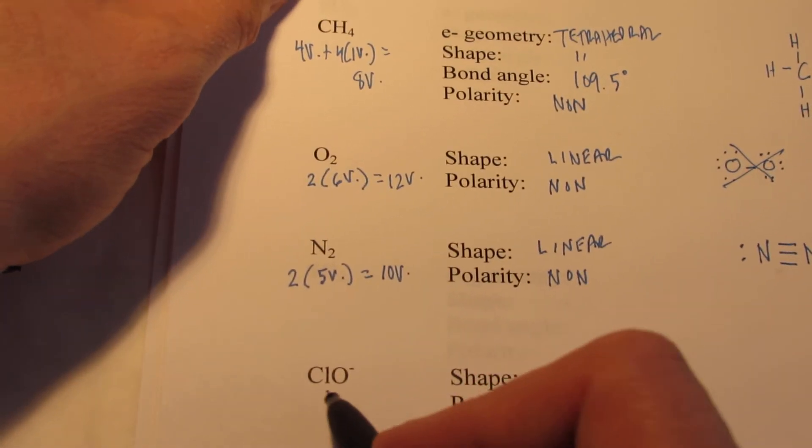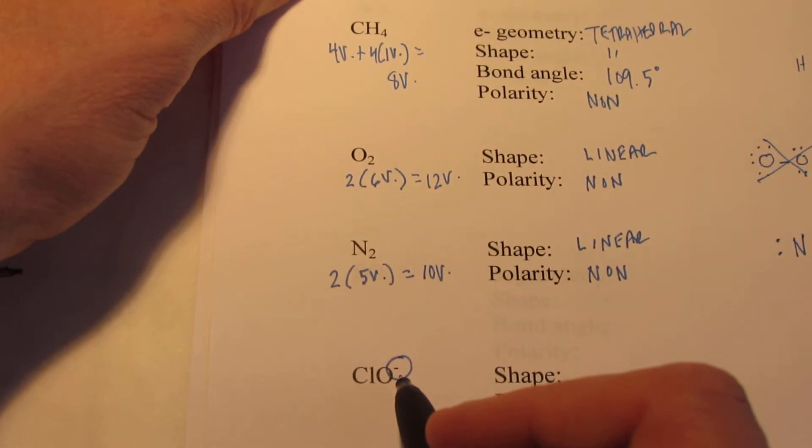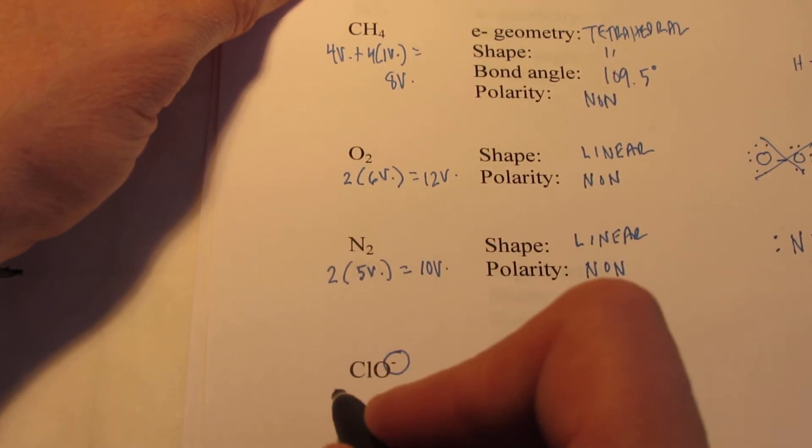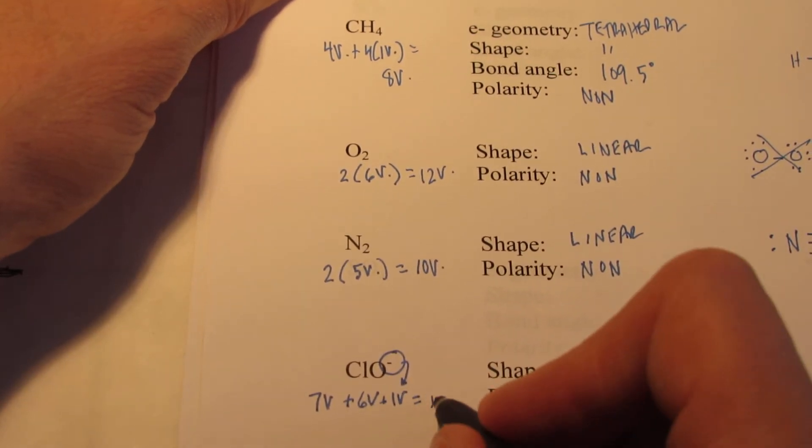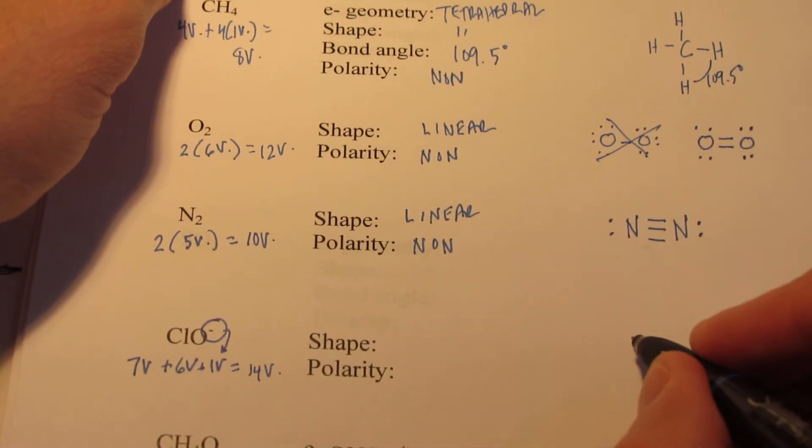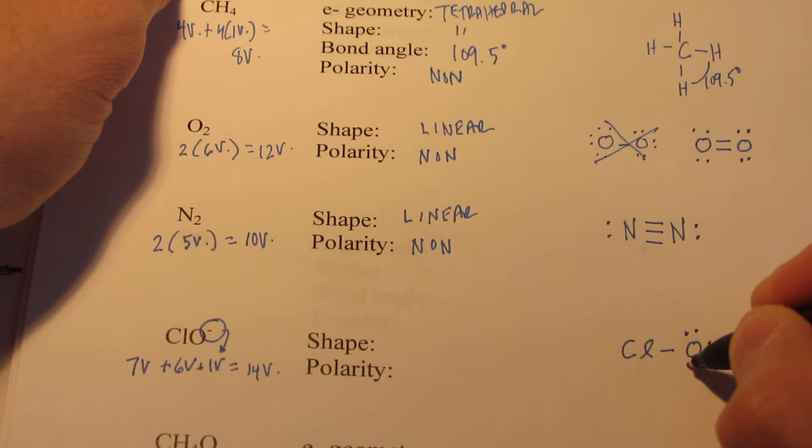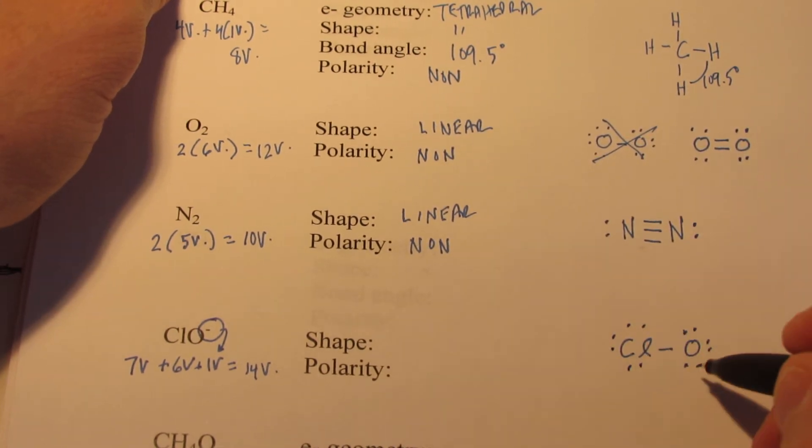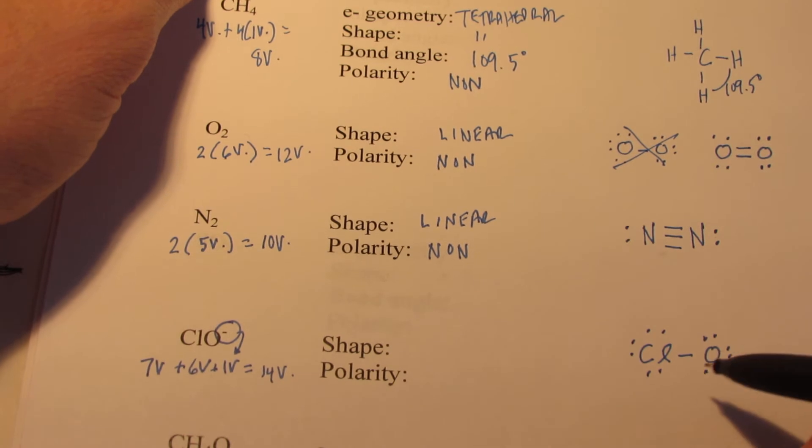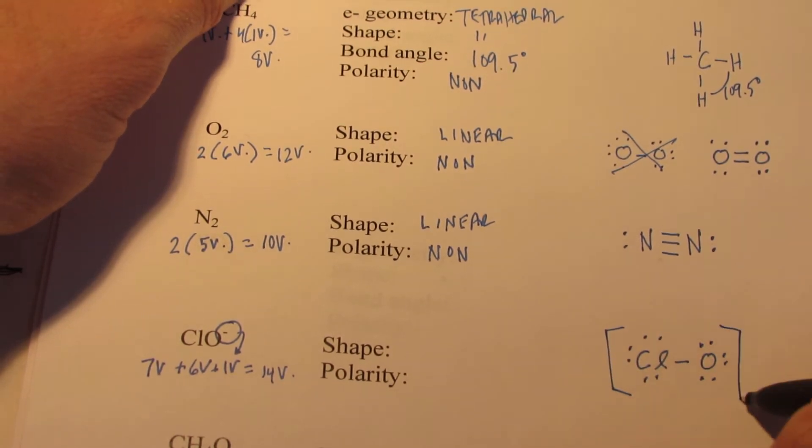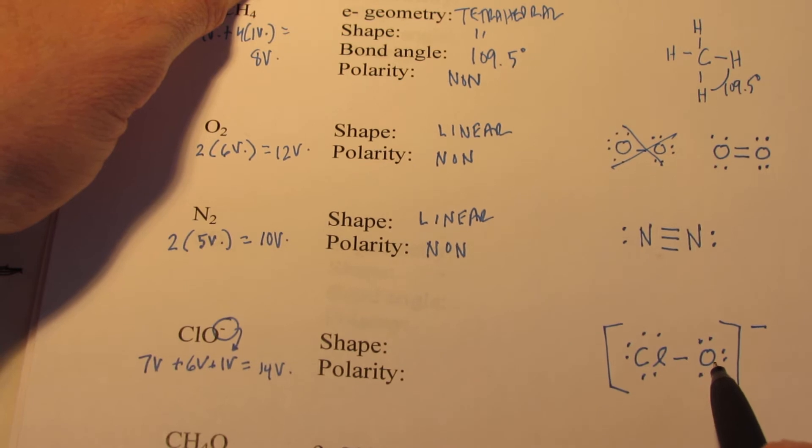All right, now here we have an ion, the hypochlorite ion. You'll see we have a negative charge here. What we do with that is we're going to add a valence electron to our total because this ion has gained an electron. So chlorine has 7 valence, oxygen has 6, and then we're going to add one more to our total. So we have 14 valence electrons here. So we'll put Cl and O next to each other, put a pair between them, give oxygen its full octet and chlorine its full octet. We've used 2, 4, 6, 8, 10, 12, 14. That's just what we're allowed. Now we've had to add an electron, and to show someone that, we actually put brackets around ions, at least their Lewis structures, and the charge on the outside of that bracket. Your Lewis structure's not complete until that's been done.